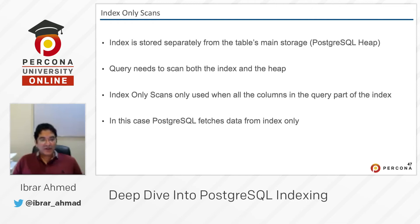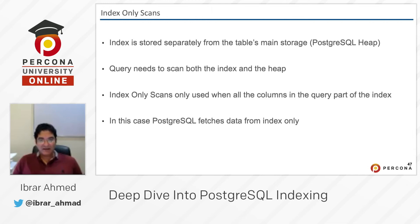With index-only scan, if all the columns in the query are present in the index, we just read the index and get the data directly — we do not need to read from the heap. This is a performance improvement. It is called index-only scan, and when all the columns are part of the index, you get much better performance.